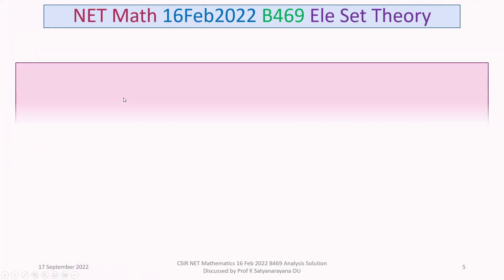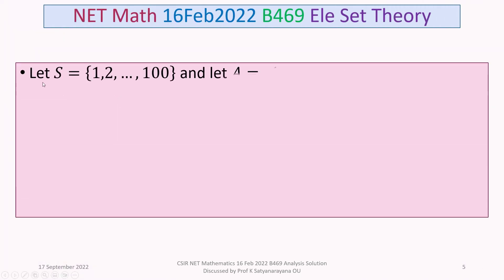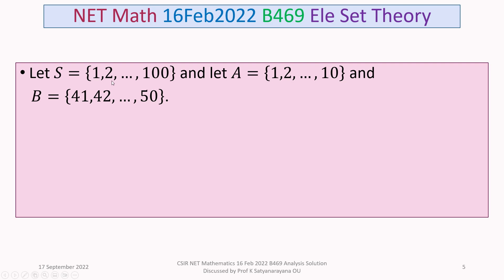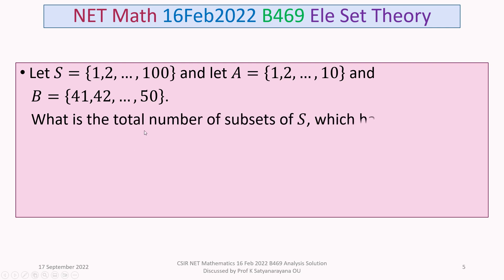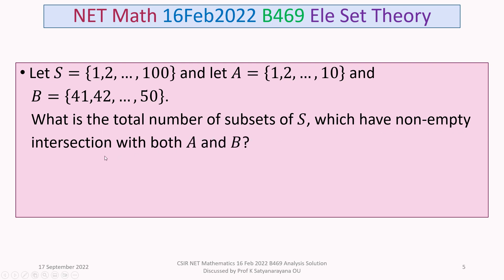The problem is: let S be the set consisting of the natural numbers 1, 2, 3, ..., 100. Let A be the set consisting of the numbers 1, 2, ..., 10, and B be the set consisting of the numbers 41, 42, ..., 50. What is the total number of subsets of S which have non-empty intersection with both A and B?